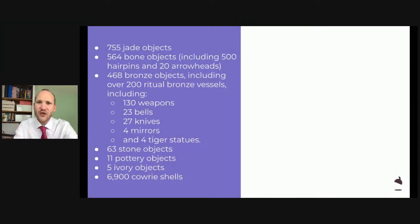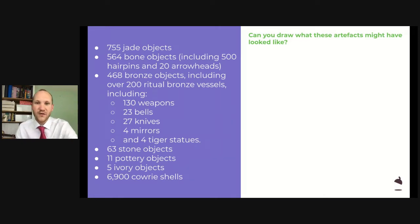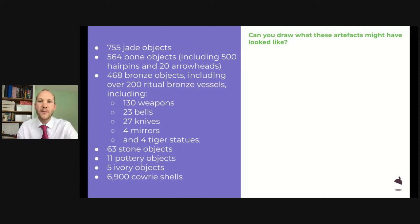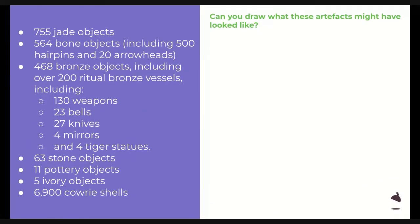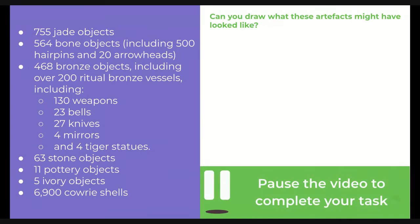This is really useful evidence for historians. They found all of this evidence in the tomb. What I'd like you to do is look at those different objects and draw what you think they might have looked like. I'm going to show you in a minute what they really look like, but before I show you, choose any of those objects and — based on your knowledge of the Shang dynasty so far — draw what you think they would have looked like. Pause the screen and draw some artifacts from Fu Hao's tomb now.